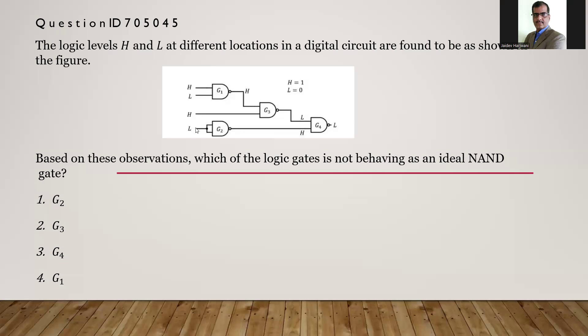When you give only high-high, then it should give you low. So low-high should give you high. So G4 is not working properly.